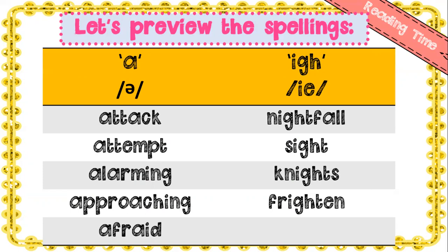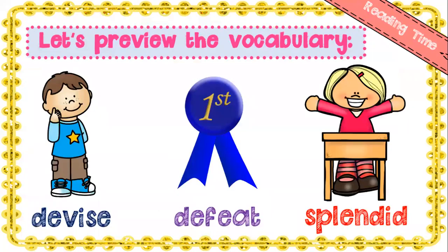Attack. Attempt. Alarming. Approach. Afraid — so all of your schwas are at the beginning of the word. Now you've got your 'i' sound spelled 'igh': nightfall, sight, nights, frighten.